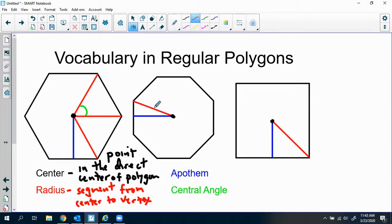So notice, you can actually draw as many radii as there would be to the number of vertices that there are. So in this hexagon, there are six radii that you could draw. I've drawn three of them.